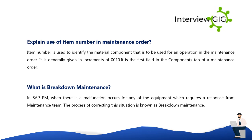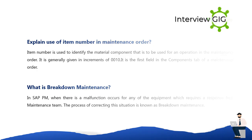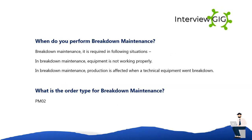Breakdown maintenance occurs when a malfunction occurs for any equipment that requires a response from the maintenance team; the process of correcting this situation is known as breakdown maintenance. It is required when equipment is not working properly and production is affected due to a technical equipment breakdown. The order type for breakdown maintenance is PM02.